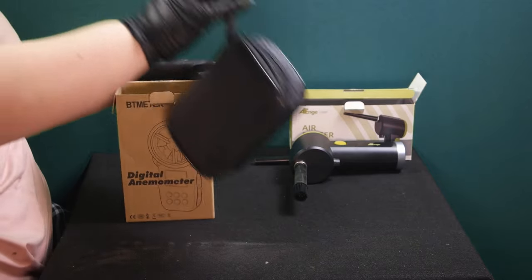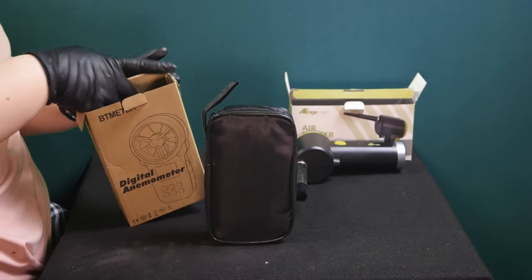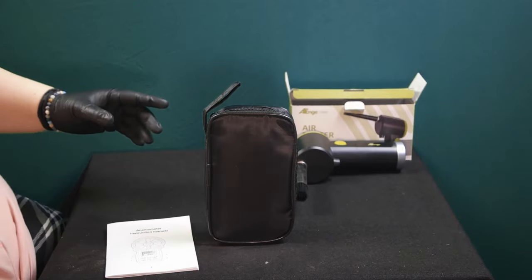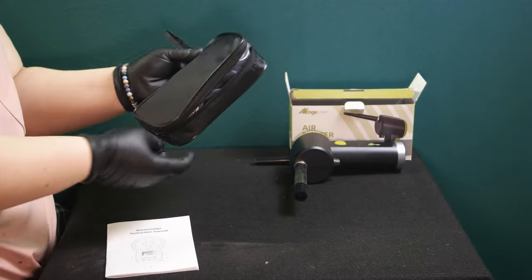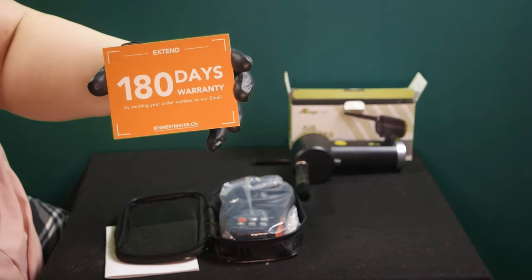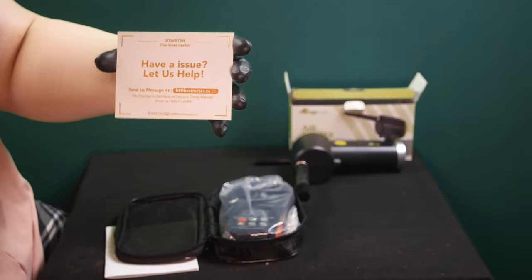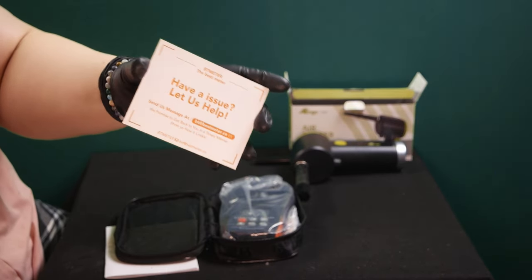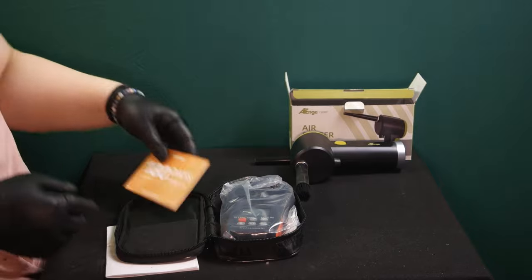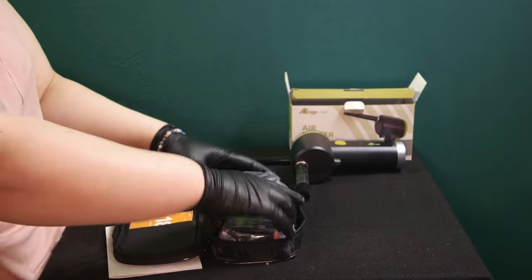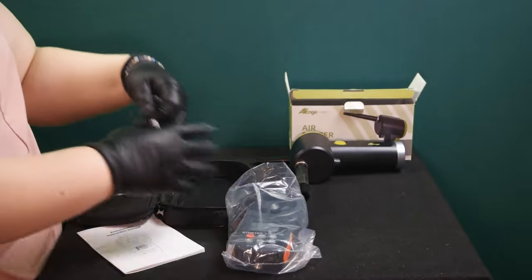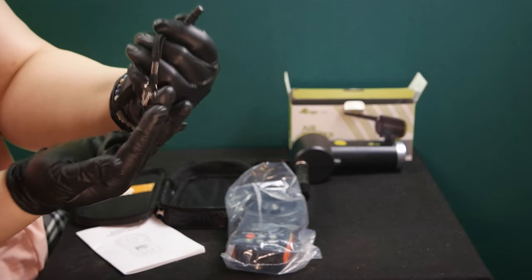First thing you're going to pull out is the device itself. It does come with a little pouch and your user's manual. Nothing else in the box. Inside the little pouch, on the left here, they provide you with a little 180-day warranty. And on the back, they provide an email for you to get in touch with them if ever you have any kind of an issue.